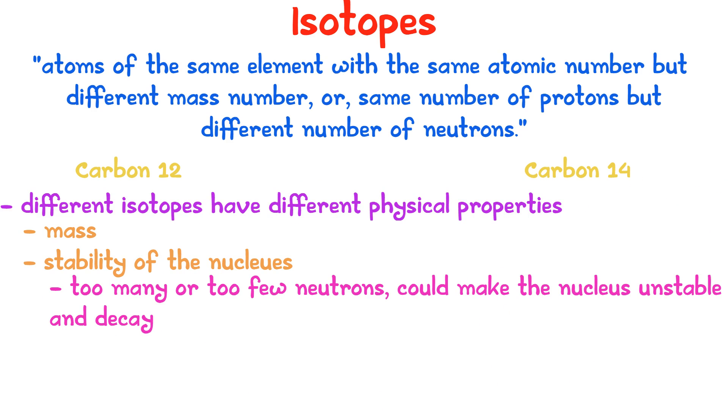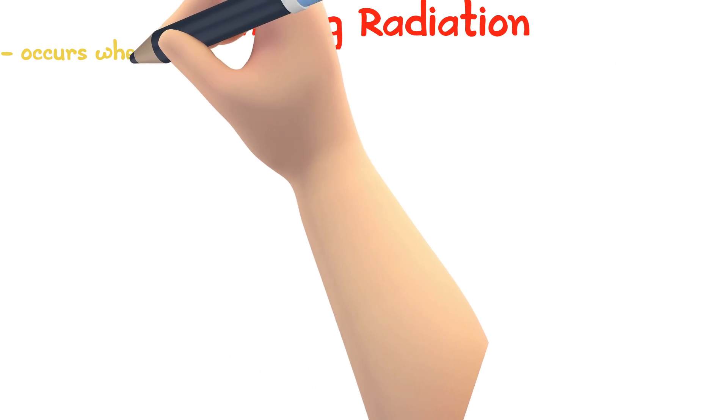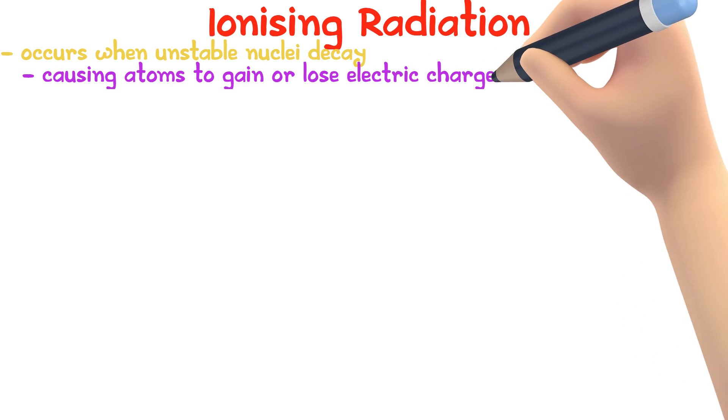When an unstable atom decays, energy is given out. Ionizing radiation occurs when unstable nuclei decay. It causes atoms to gain or lose electric charge, forming ions.